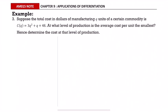Example three: Suppose the total cost in dollars of manufacturing q units of a certain commodity is c(q) = 3q² + q + 48. At what level of production is the average cost per unit the smallest? The average cost per unit being smallest means the average cost is minimum. When the average cost is minimum, the marginal average cost equals zero.